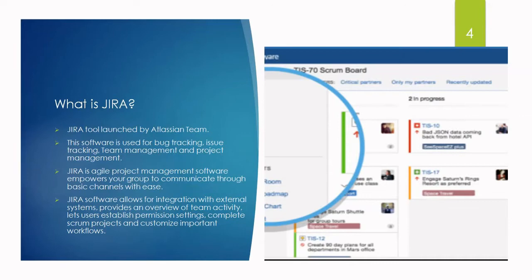Teams of all kinds can enjoy increased productivity and visibility as they march towards releasing amazing software and products. Jira helps in sprint planning as well as test case management and effective reporting. Jira is the agile project management tool — it allows for integration with external systems, provides an overview of team activity, supports established permission settings, complete scrum projects, and customizable workflows. This is what a Jira dashboard looks like.